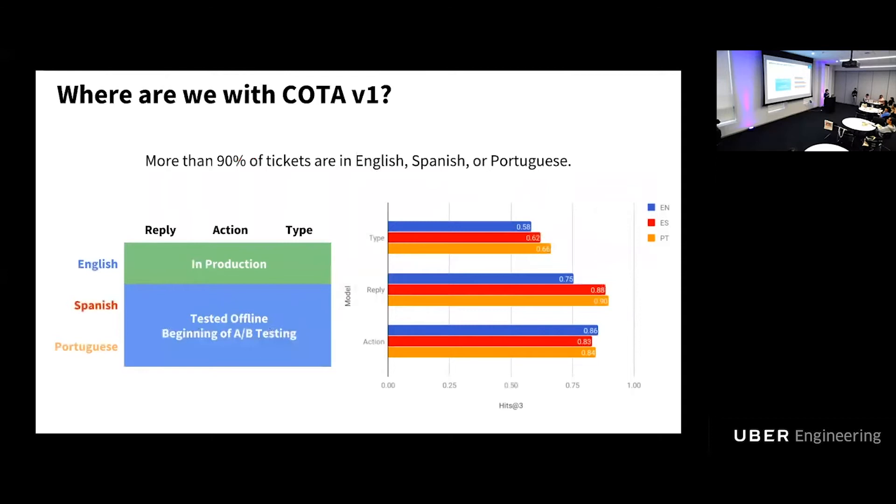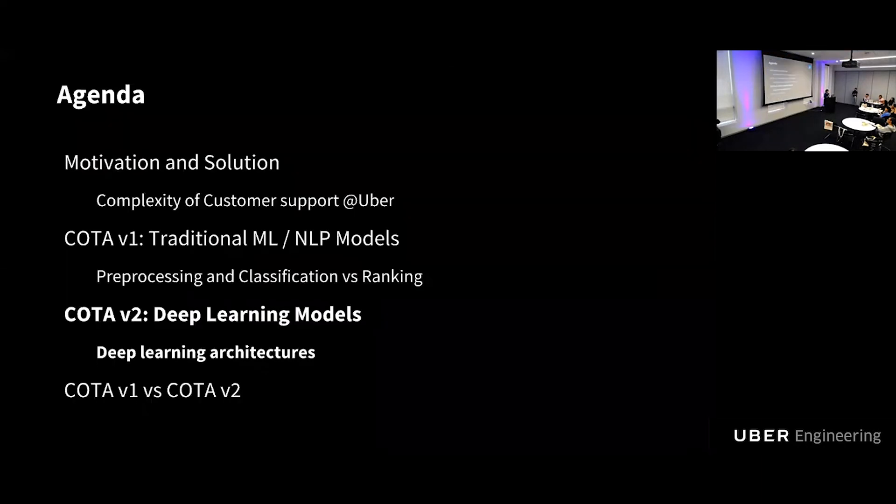So currently it's already in production serving our agents and saving millions of dollars at Uber per year. We didn't just stop there. Currently we are further expanding our English model to Spanish and Portuguese. So in total, these three language models will be able to cover more than 90% of tickets globally.